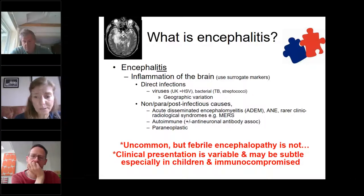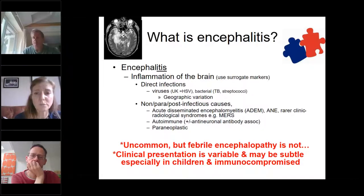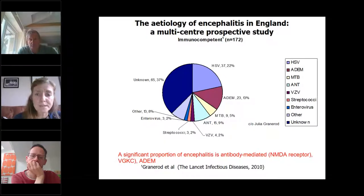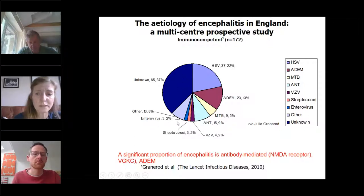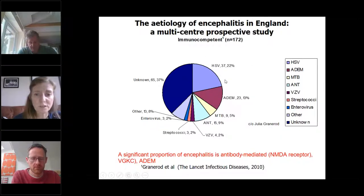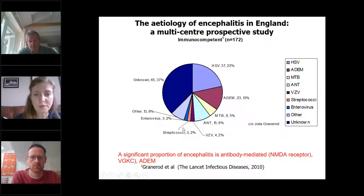Whilst encephalitis is uncommon, febrile encephalopathy is not. The clinical presentation is variable and may be subtle, especially in children and the immunocompromised. The biggest study of encephalitis in England, recruiting 172 adults and children published in 2010, found that despite a huge panel of tests, still a third had no definite diagnosis. The commonest cause in adults and children is HSV, but ADEM is a big chunk. This was the first study where we realised autoimmune antibody-mediated encephalitis was such a significant problem.